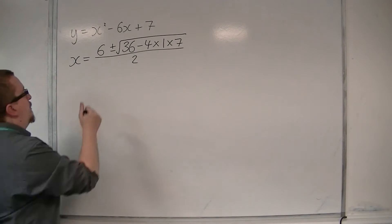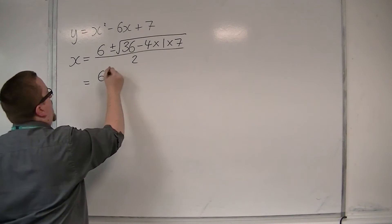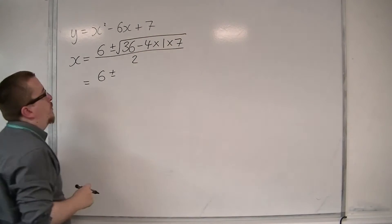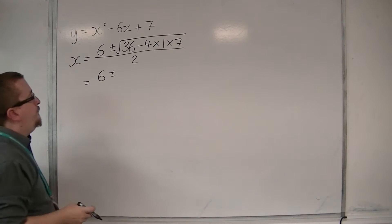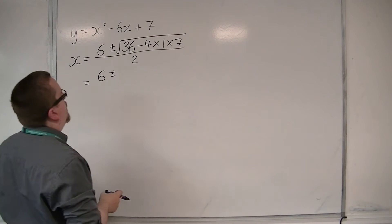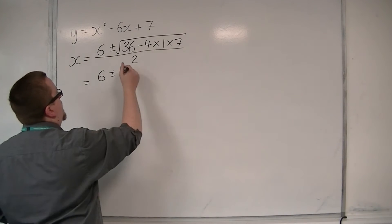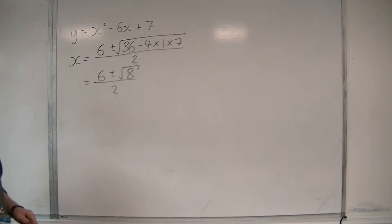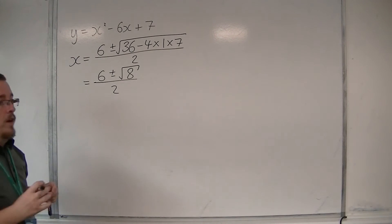So we want to simplify this. So this is 6 plus or minus, so we've got 36 take away 28. So 36 take away 28 is the square root of 8. So we have 6 plus or minus root 8 over 2.